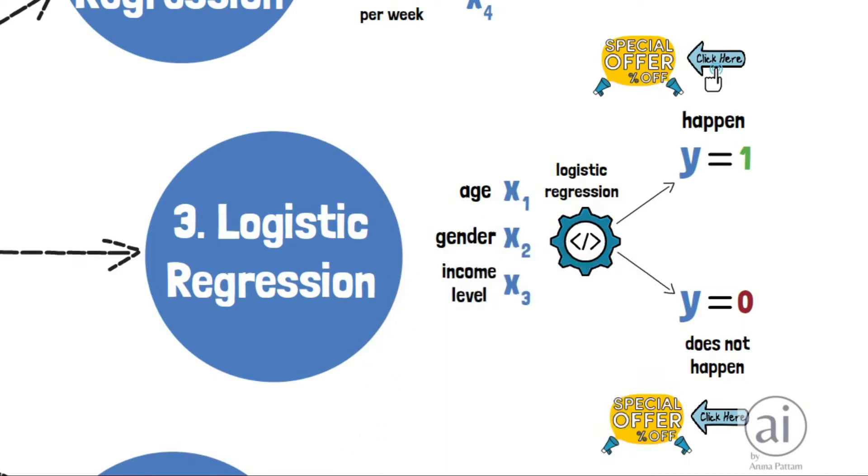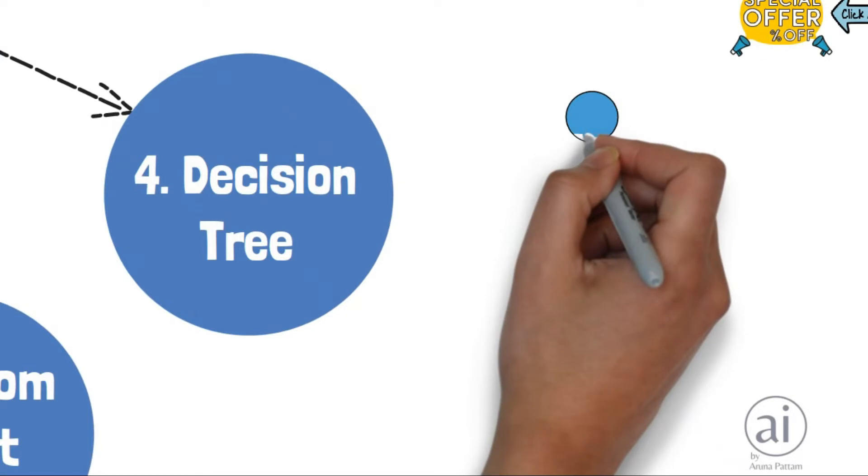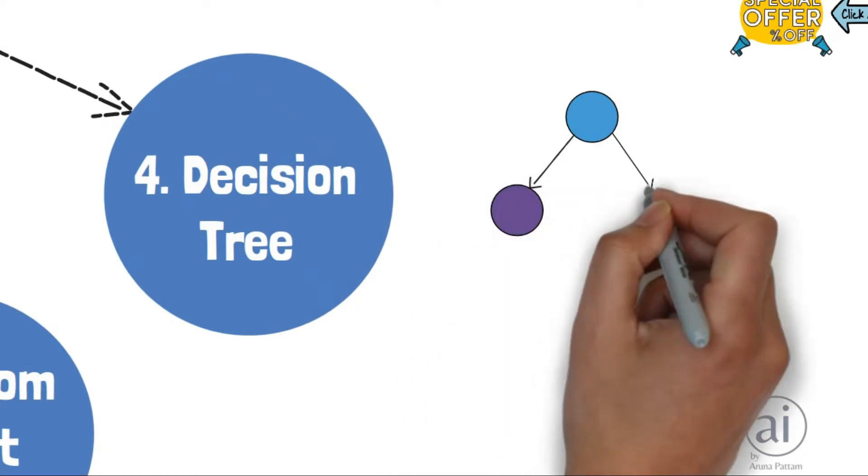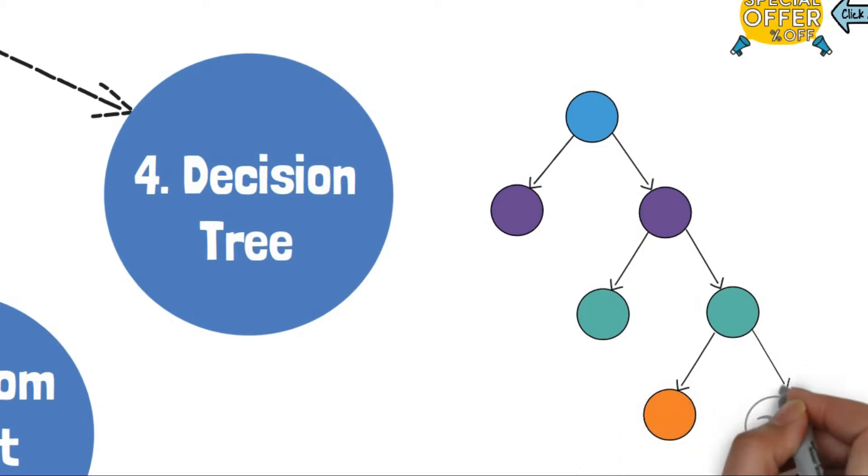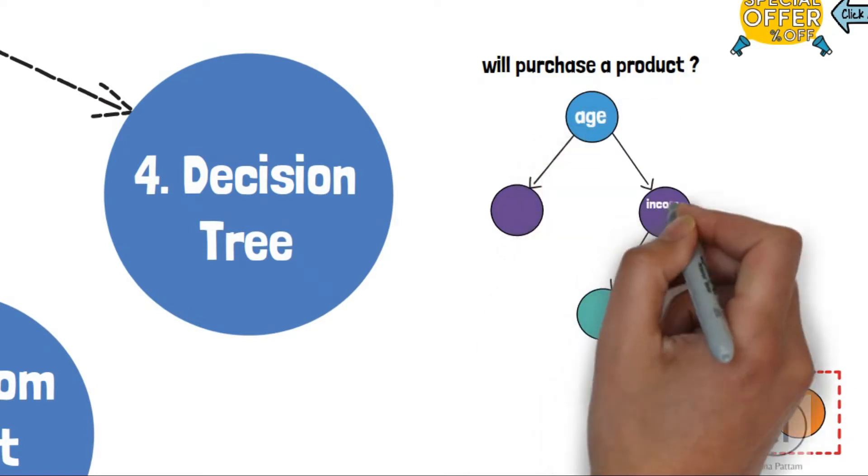Decision trees are formed by first creating a binary tree, then splitting the data into subsets based on each branch created. For example, predicting whether or not an individual will purchase a particular product based on their age, income level, and gender.